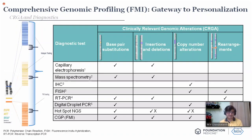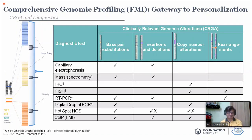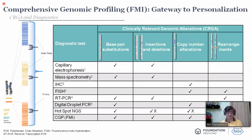Then we have droplet PCR and hotspot NGS. The majority of labs in India are offering hotspot NGS — they look into a battery of tests: exon 19 deletion, exon 21 L858R, T790M. These are very few mutations they look into, and then they report no EGFR mutation. They don't look into other genes like exon 18, or other abnormalities like amplifications or finer mutations.